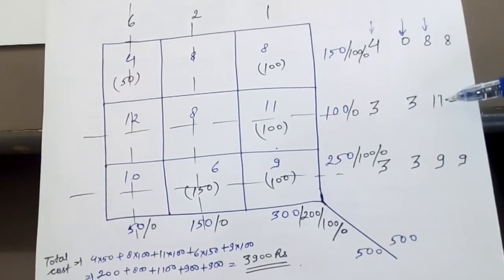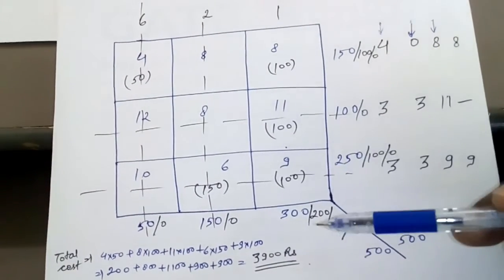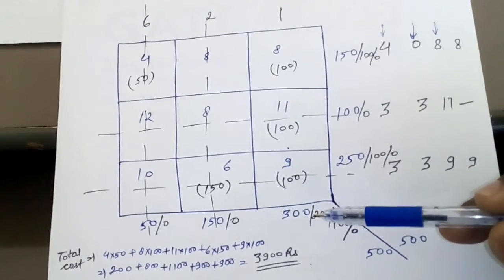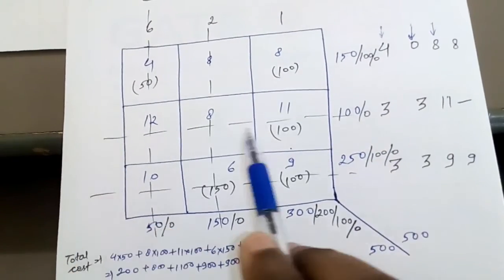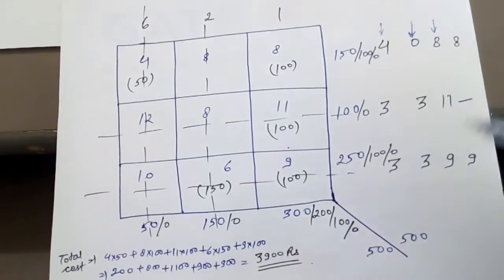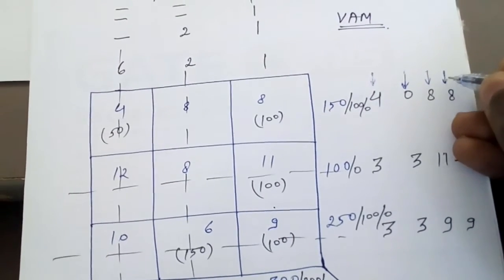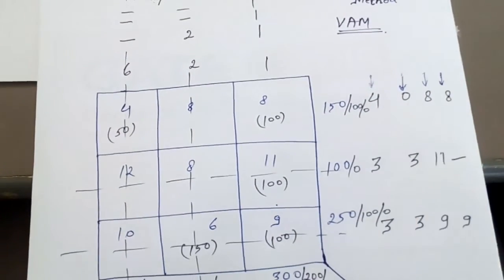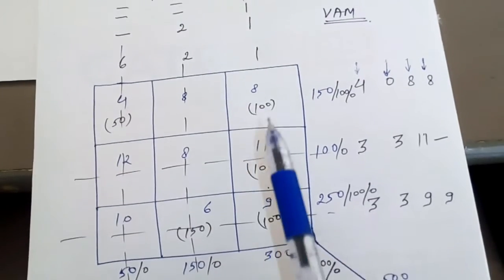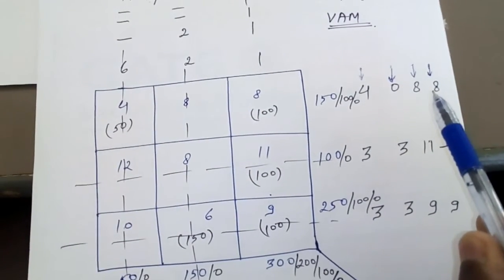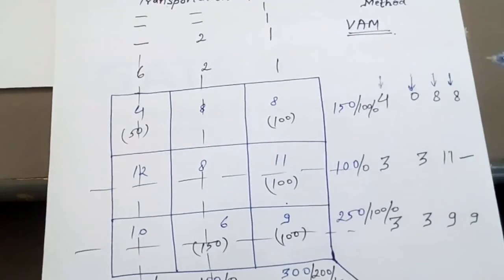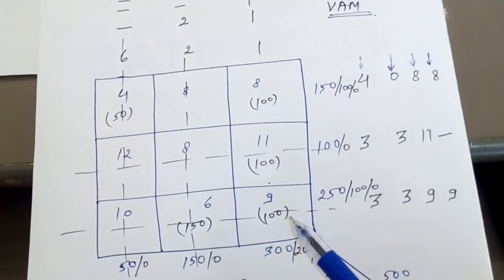In the fourth step, only two elements remain: 8 and 9. The penalty is 8 for that row, dash for cancelled columns, 9 and 1 for columns. The maximum is 9, so allocate in that cell. From the previous step 100 demand remains and 200 supply is available, so write 100, cross out that row, and 100 supply remains. Finally, 100 is both available and demanded, so write 100 in the last cell.